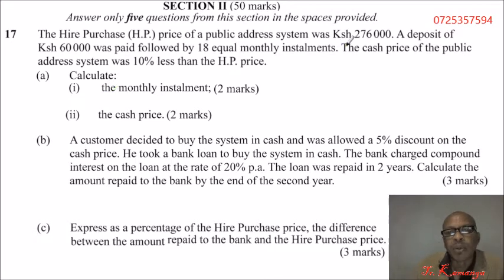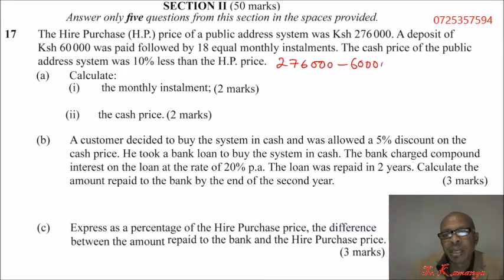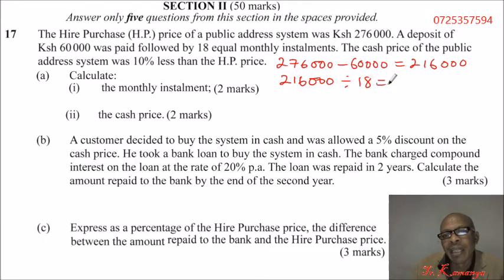To get the amount paid in monthly installments, you take 276,000 minus 60,000. When you subtract that using your calculator, you get 216,000. Since there were 18 equal monthly installments, you divide 216,000 by 18, and you get the monthly installment of 12,000 shillings.